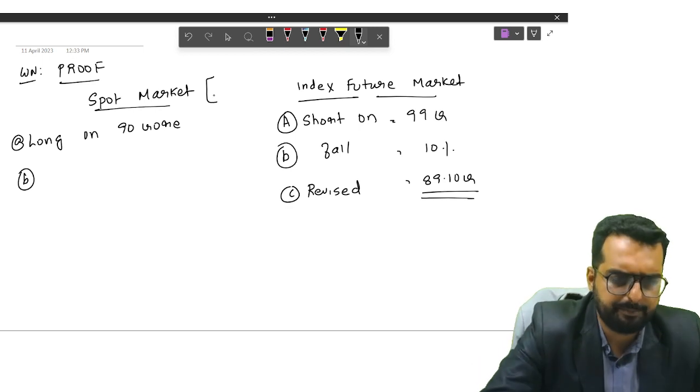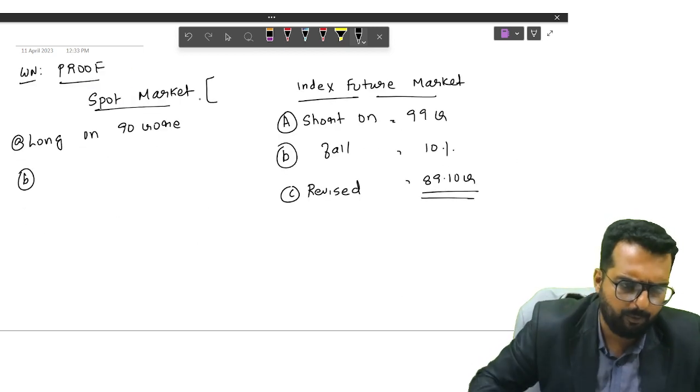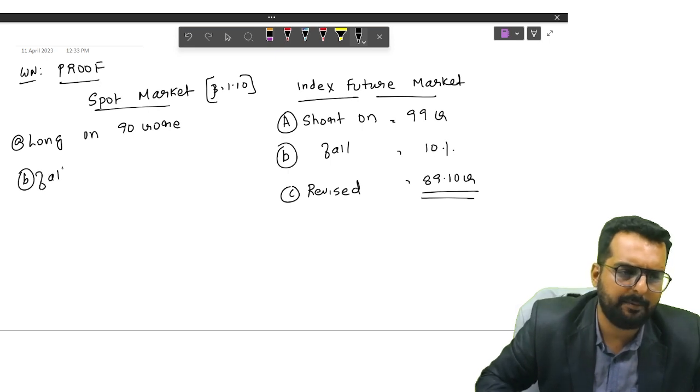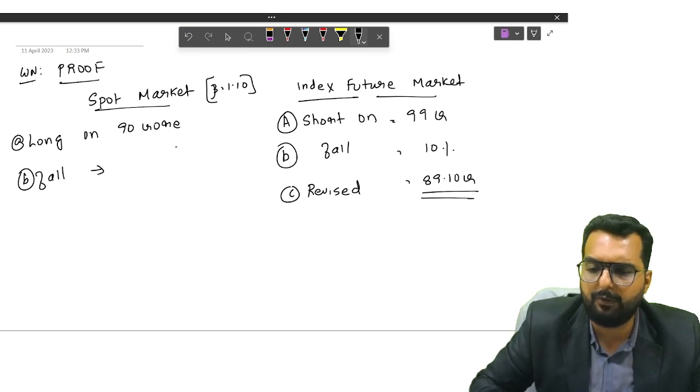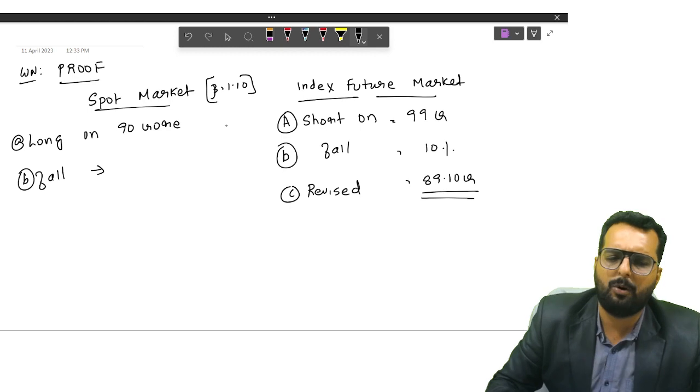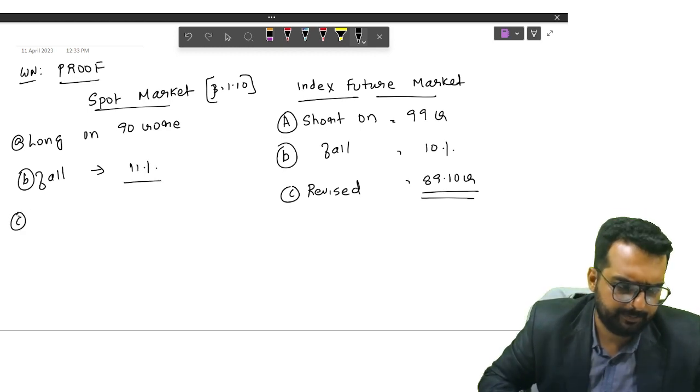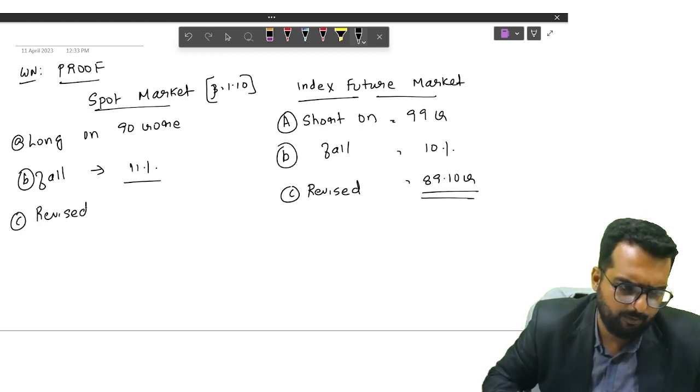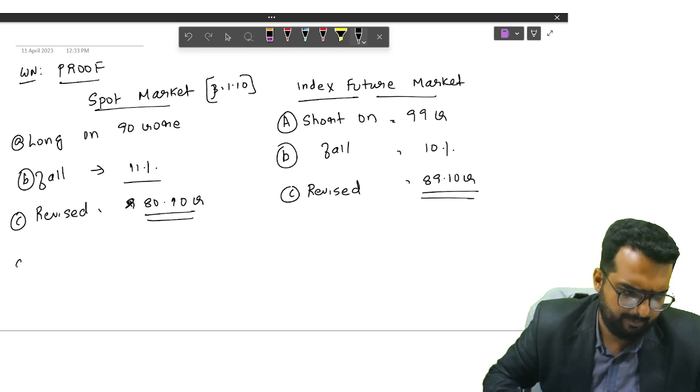Now, that is in the future market. What is the beta of this security? 1.1. So, tell me, if the market falls by 10%, this security will fall by how much percentage? It will fall by 11%. What will be my revised value over here now? It will become 80.10 crore.